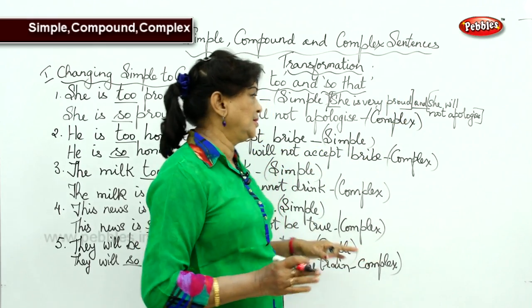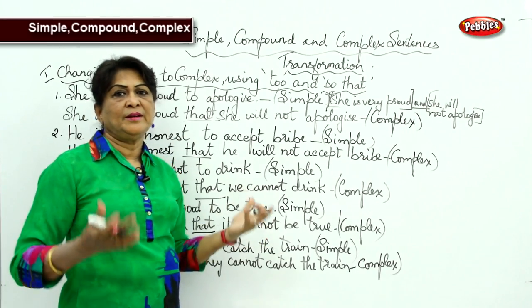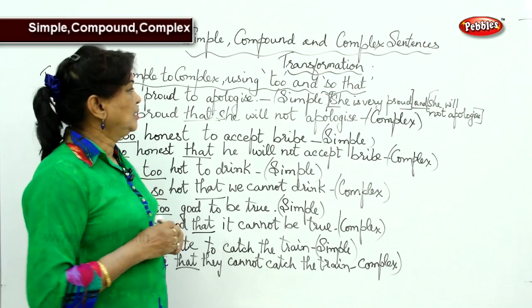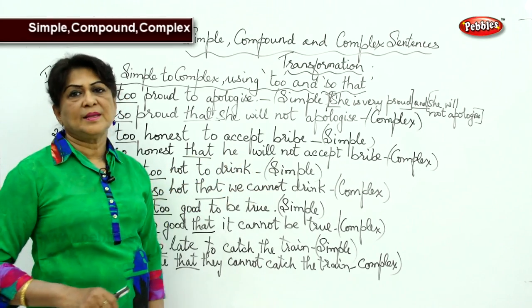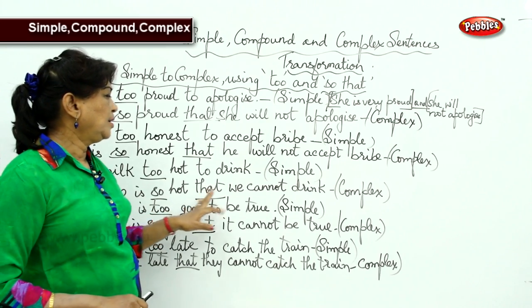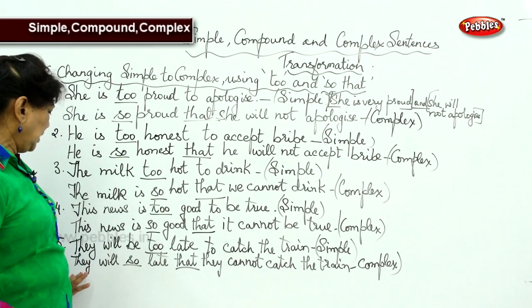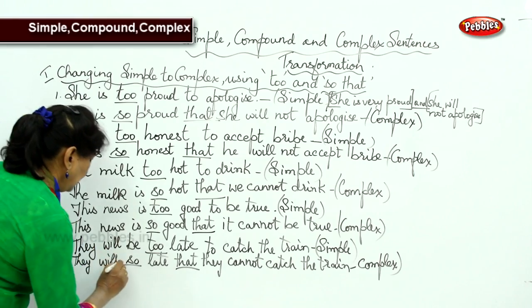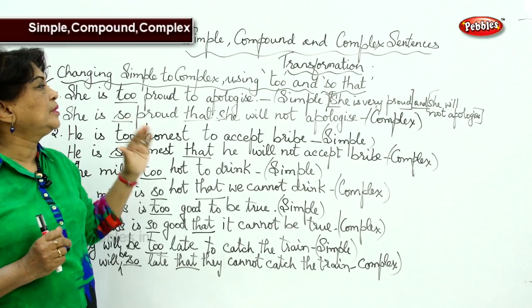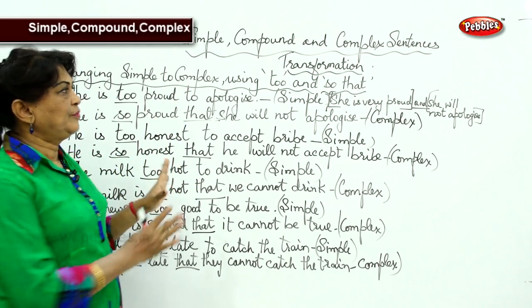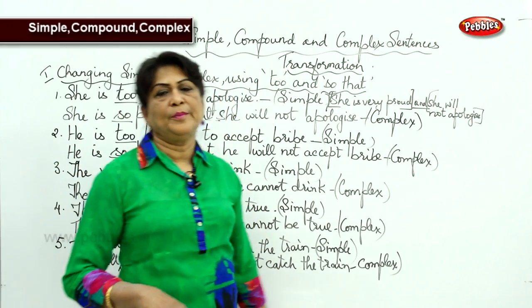Coordinating conjunctions make a compound sentence, and subordinating conjunctions make it a complex sentence — conjunctions like 'that,' 'which,' 'when' make it complex. Now applying this everywhere: 'He is too honest to accept bribe' → 'He is very honest and he will not accept bribe.' 'The milk is too hot to drink' → 'The milk is very hot and we cannot drink it.' 'The news is too good to be true' → 'The news is very good and it cannot be true.' 'They will be too late to catch the train' → 'They will be very late and they cannot catch the train.' That is how to change simple to complex and simple to compound.